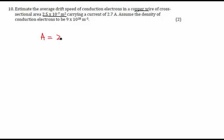Cross-sectional area is given as 2.5×10⁻⁷ m² carrying a current of 2.7 ampere. So I can write that this current flowing through the copper wire is 2.7 A. It is also saying that the density of conduction electrons is 9×10²⁸ per meter cube.